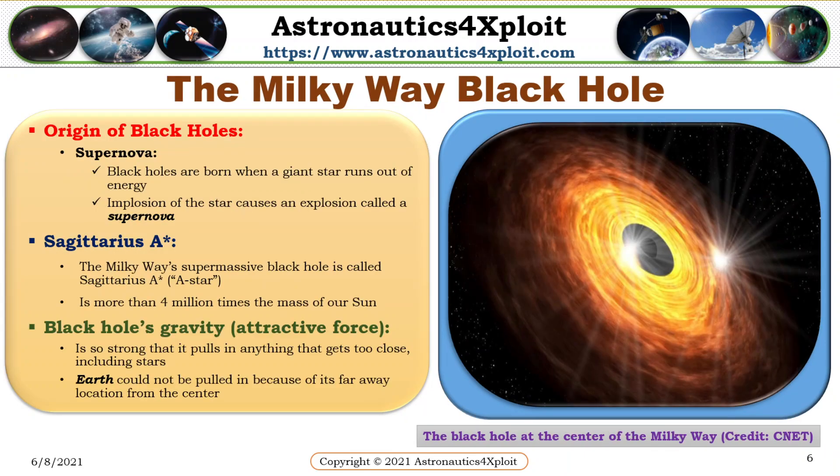The Milky Way black hole. Black holes are born when a giant star runs out of energy. The implosion of the star causes an explosion called a supernova. The Milky Way's supermassive black hole is called Sagittarius A*. It is more than four million times the mass of our sun. Black holes' gravity is so strong that it pulls in anything that gets too close, including stars. Earth could not be pulled in because it is far away from the center. This picture shows the black hole at the center of the Milky Way.